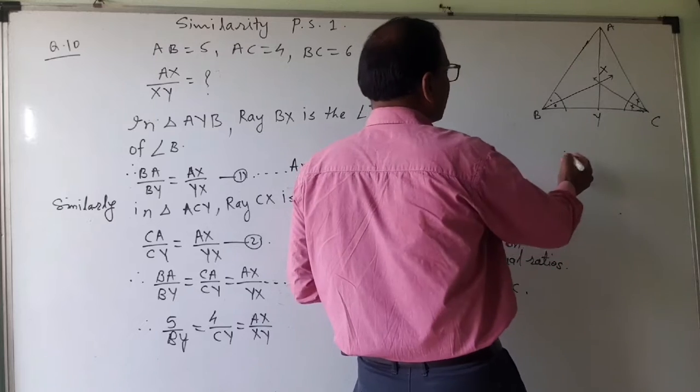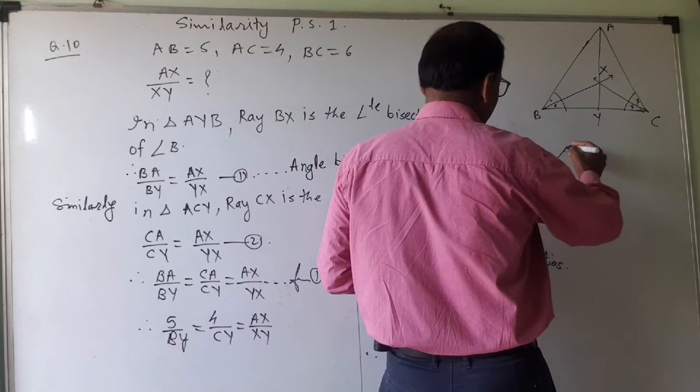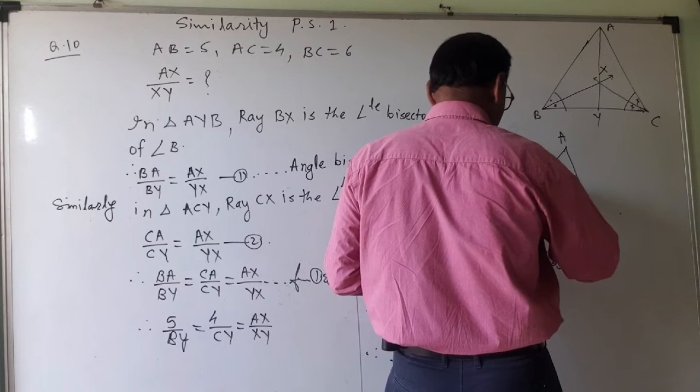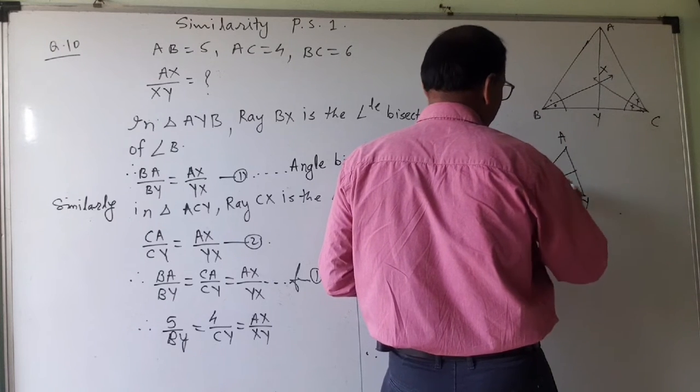If I look at this triangle separately, it will be like this. This is A, this is Y, and this is BX ray. This and this is the same.